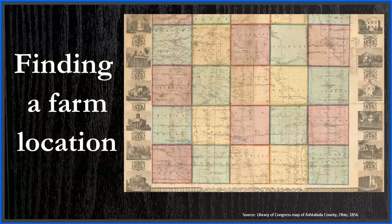Any websites that I mention will also show up in the description for this video in the order that they appear. Let me share my screen. I'm going to walk you through how to do that using plat maps, like the lovely cover image of Ashtabula County, Ohio from 1856, census records, and Google Maps. Obviously it doesn't work in every situation, but is quite successful for records in the Midwest.